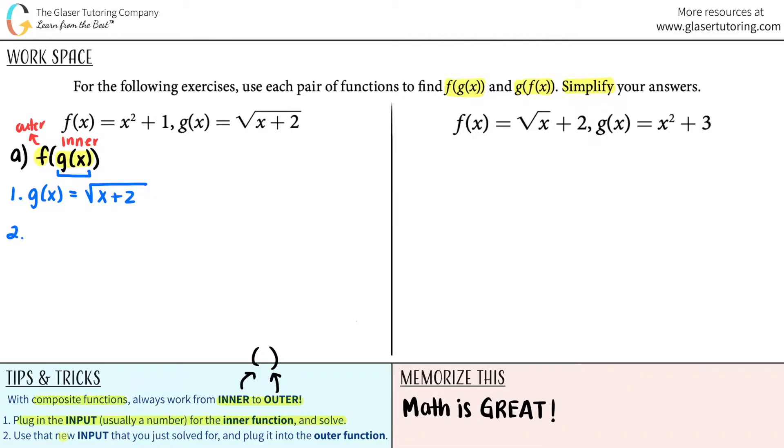The second part is you're going to use that new input, which was what you got out in part one, and you input it and plug it into the outer function. The outer function was f. So f of the square root of x plus two. It's what your answer was in the beginning part. So that's why I changed it to this. So now let's see. Well, what was the f function? The f function was this, right? x squared plus one. But instead of all the x values, I'm going to put in square root of two.